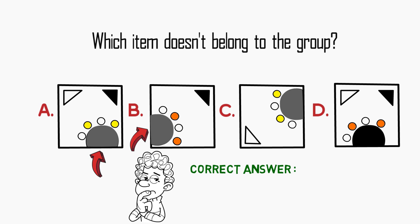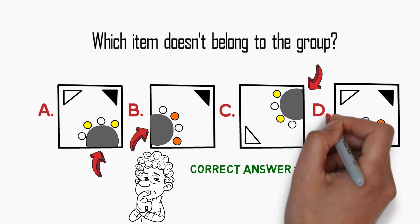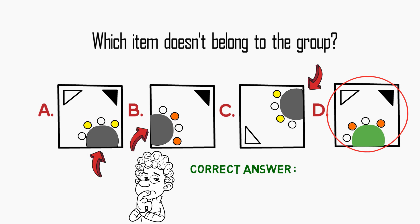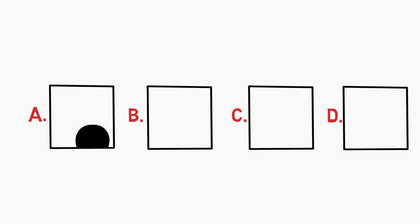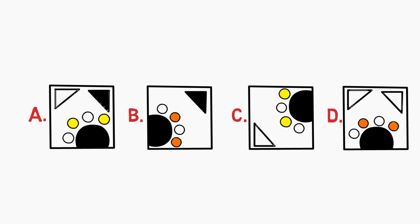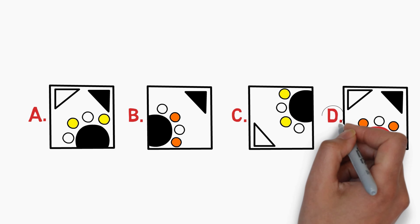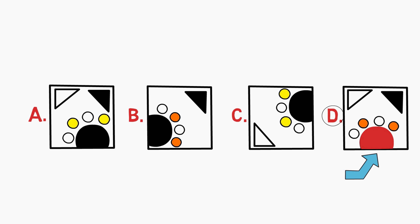In shape D, the half circle is placed in a different location — at the bottom middle of the square, not attached to a corner. This is why the item that doesn't belong to the group is choice D. To recap: the pattern is that all half circles are attached to the corners of the square, but in shape D the half circle is placed in the lower part of the square instead. So the correct answer is choice D.